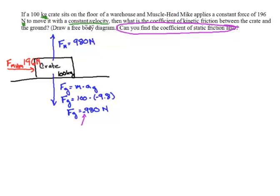But since it is moving at a constant velocity, we know that the crate has a force of friction that also equals 196 newtons. We have a completed free body diagram.